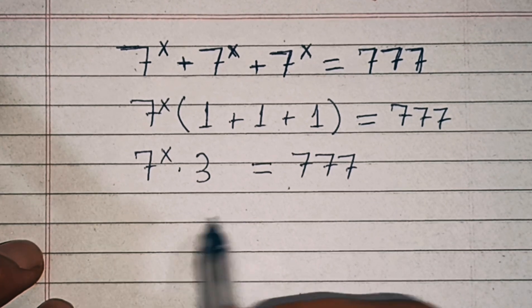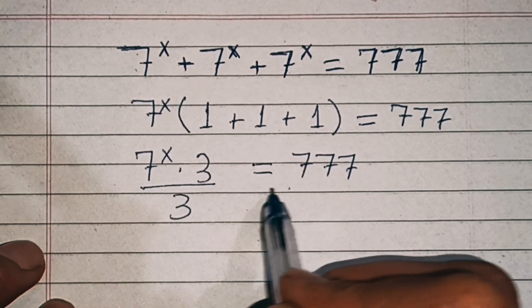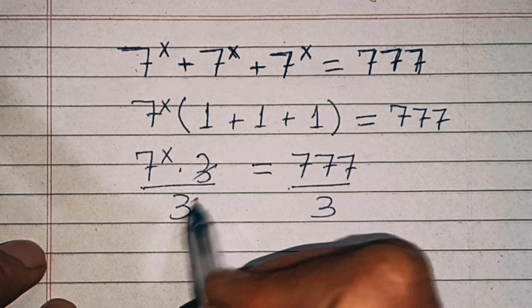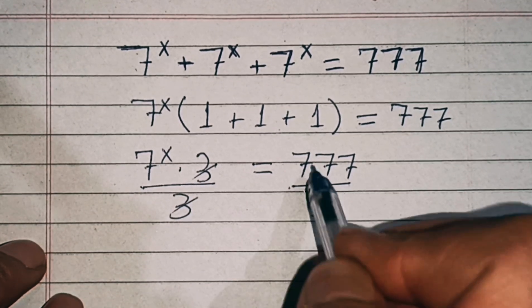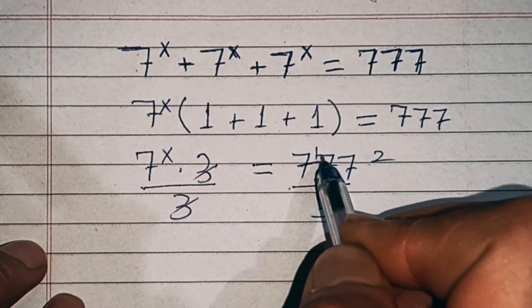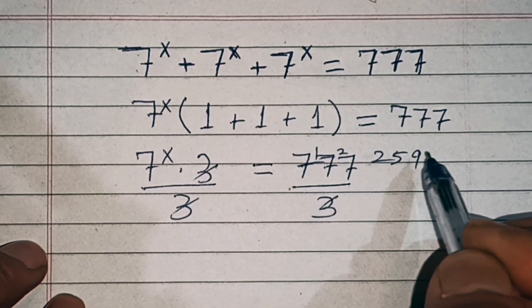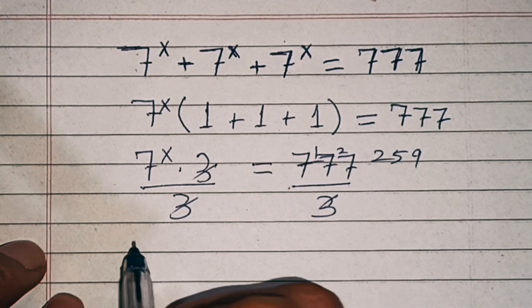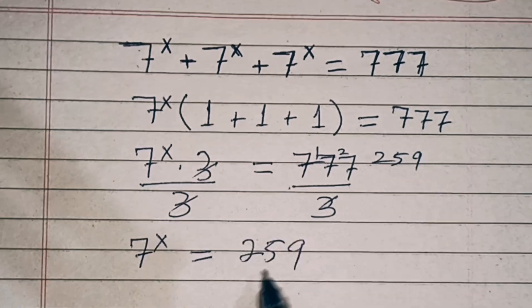In the next step, we divide both sides by 3. The 3 on the left gets cancelled out, and 777 divided by 3 gives us 259. So that means we have 7 power x equal to 259.